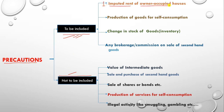The first item to be included is imputed rent of owner-occupied houses. If there is a house in which the owner himself is living, obviously he won't pay rent to himself. But if he were renting a house from the market, he would have to pay rent. So wherever an owner has occupied his own house, the imputed rent must be added, because just like others, he is also enjoying housing services — even though it's his own house, the imputed rent of that service must be added.